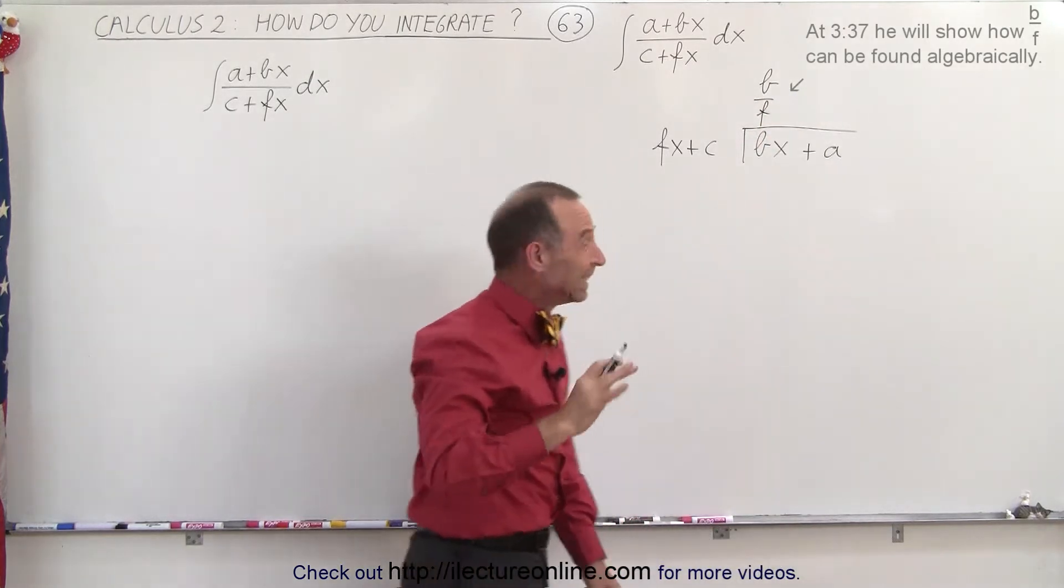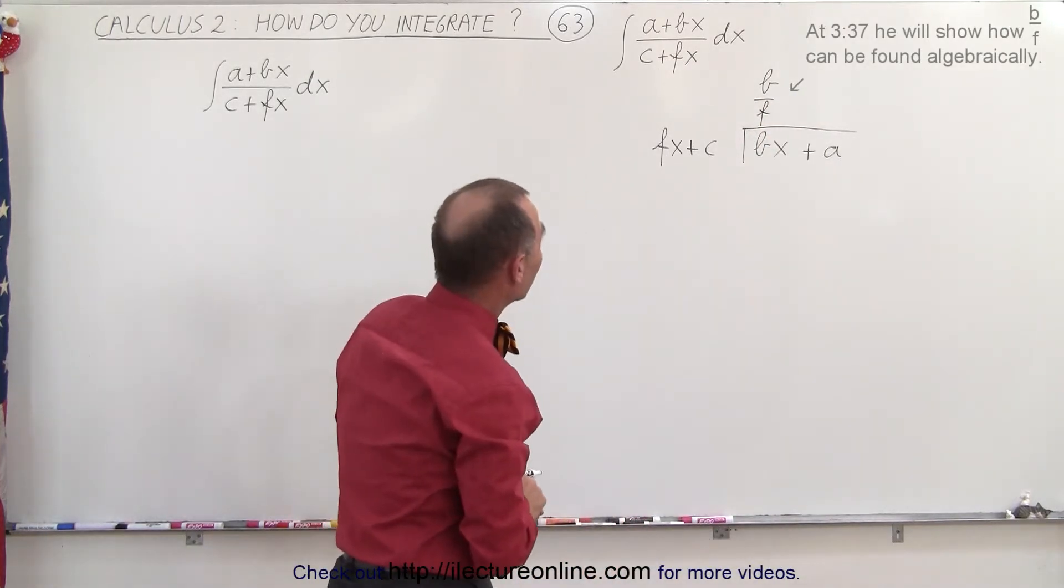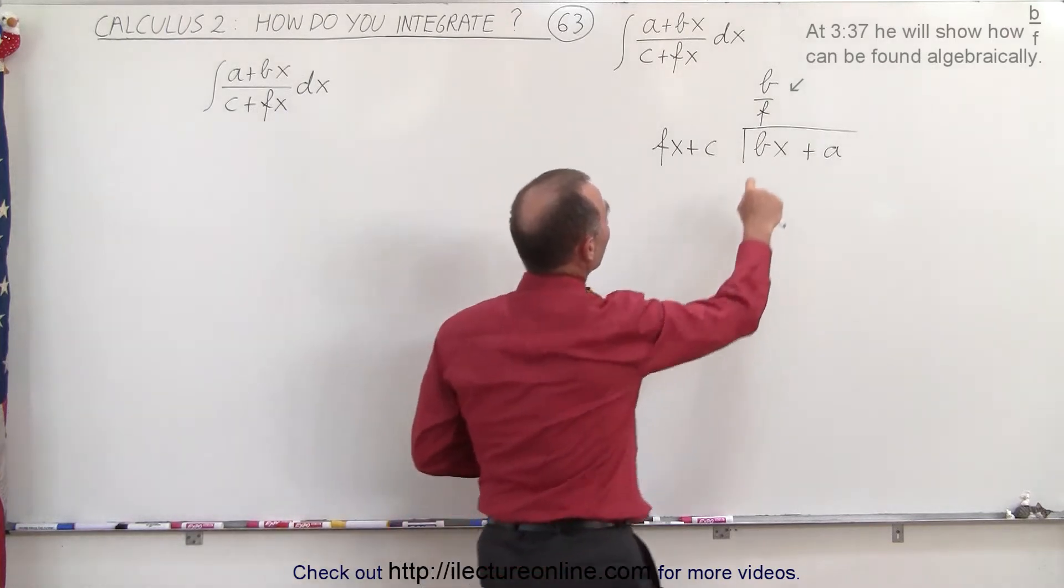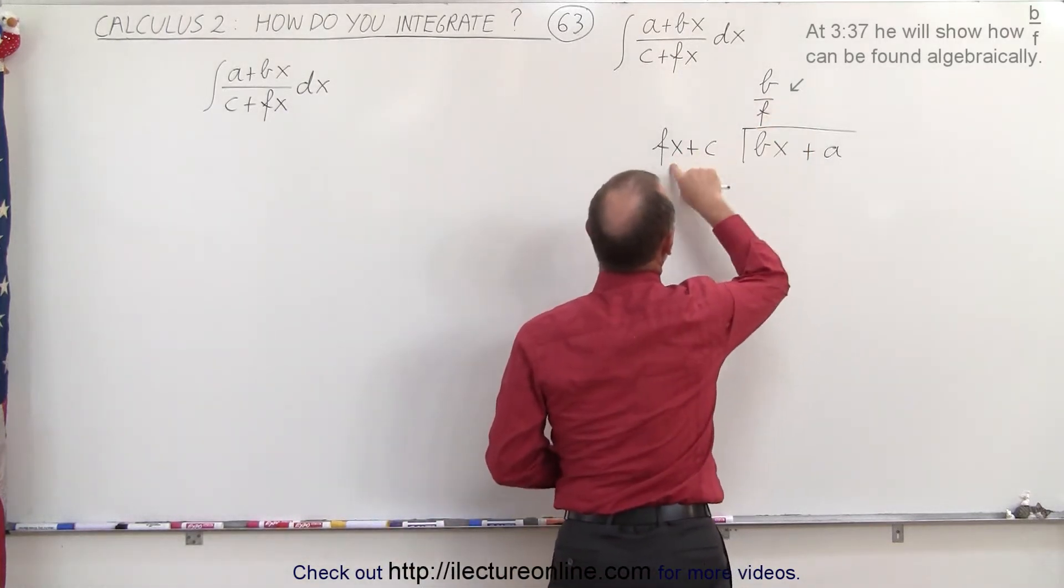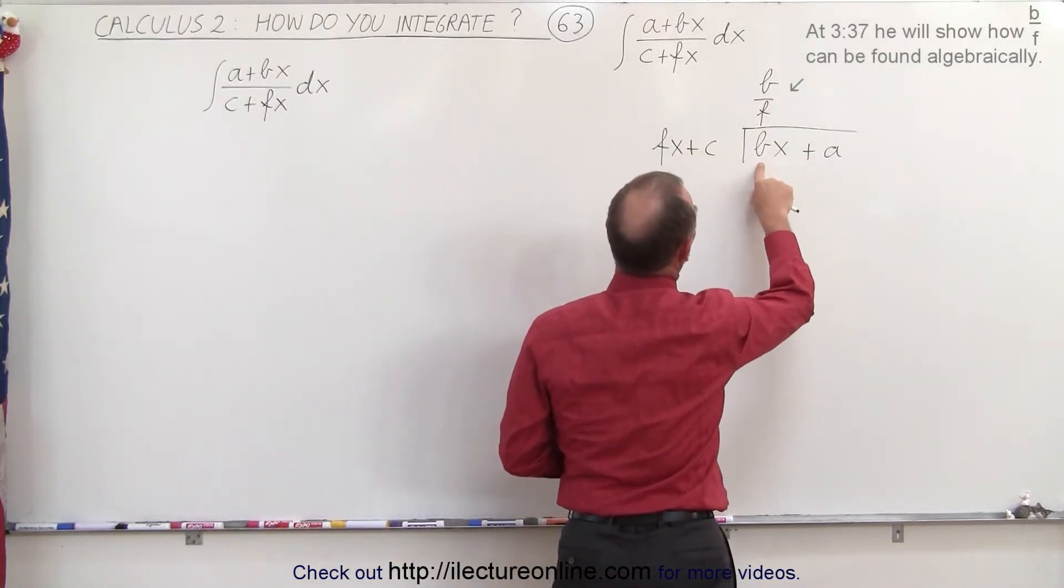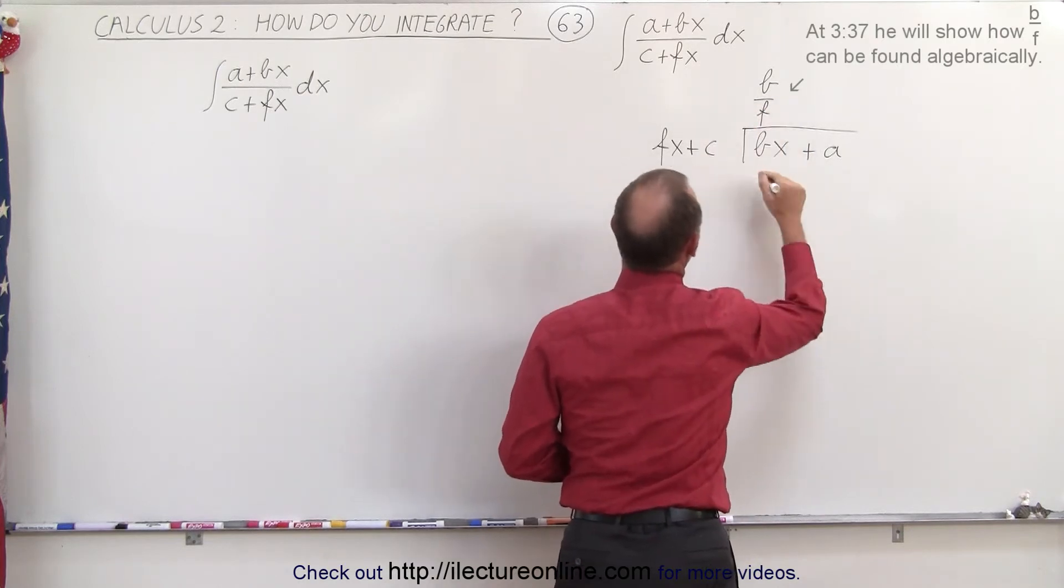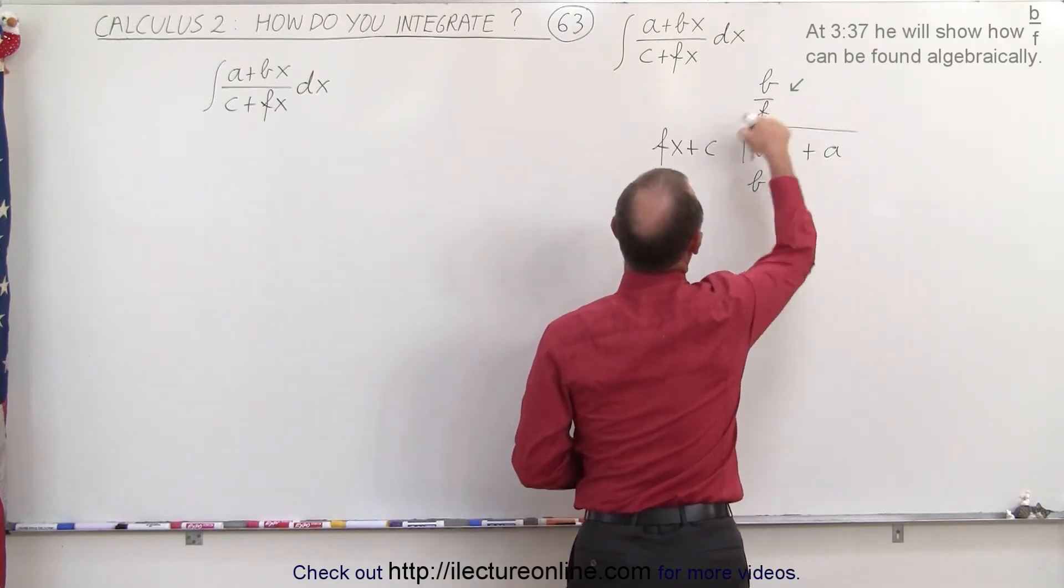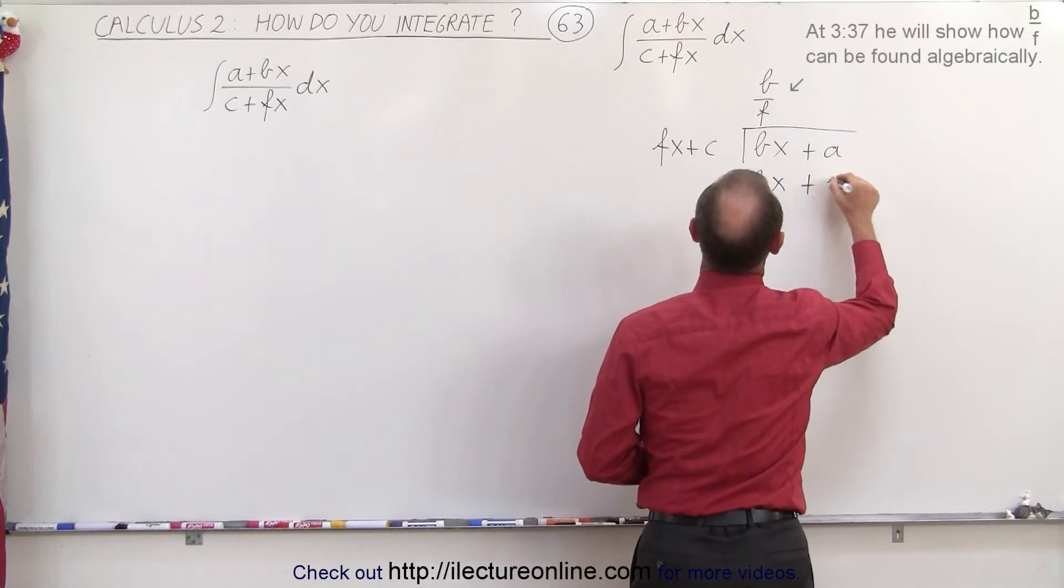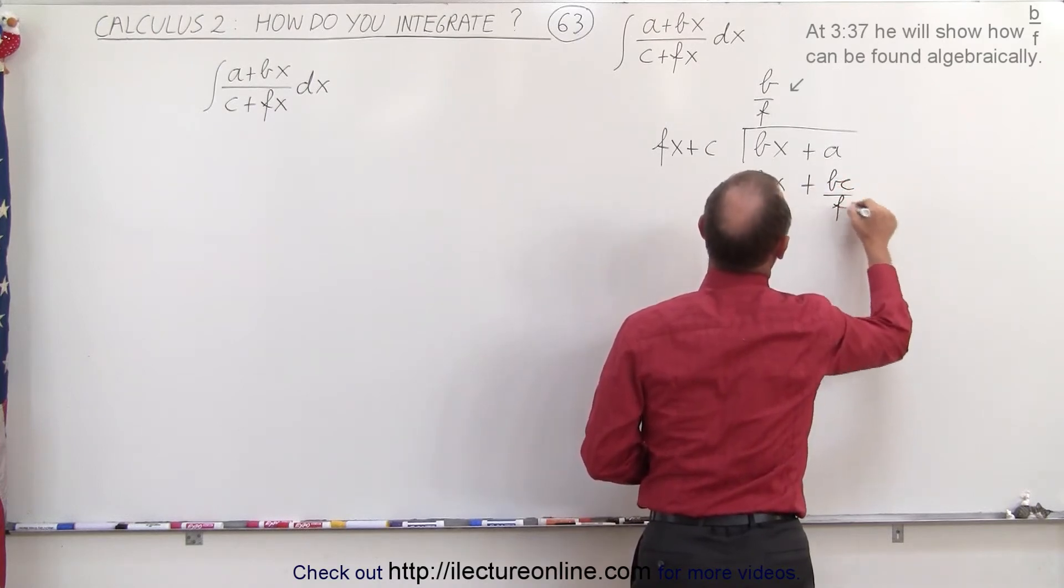All right. Sometimes it's a little tricky trying to figure out what we need to do here, but notice if I multiply b over f times fx, I will get bx. So this times this will give me bx, and this times this will give me a plus bc over f.